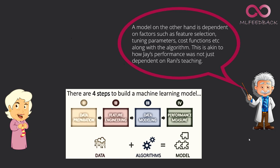This is akin to how Jay's performance was not just dependent on Rani's teaching. Rani's teaching was important for Jay to perform well in the final exam. But it is not just listening to her teaching. Jay also practiced better, planned his test better, and did a lot of research. Just like how the various inputs to the model are also different.